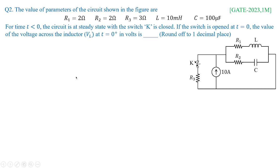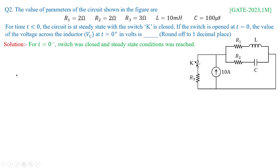Take paper and pen, draw the circuit as given, close the switch, replace the values of R1, R2, R3, L, and C with the actual values given, then try to solve the rest of the problem. At t equal to 0 minus, assuming the switch is closed for long duration, steady state conditions would have been reached. Inductors behave as short circuits, capacitors behave as open circuits.